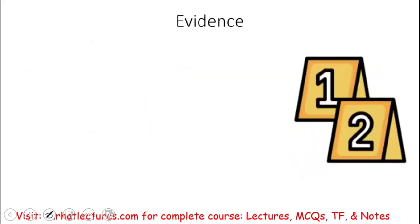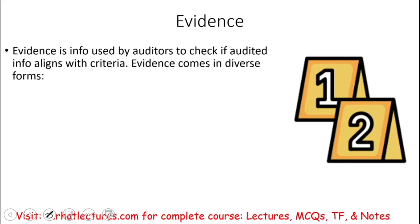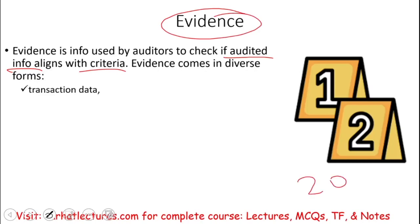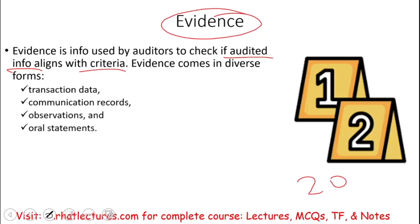As an auditor, you need to collect evidence. Evidence is used to check if the audited information aligns with the criteria — I need to collect some sort of proof. Evidence could come in diverse forms: transaction data, communication records, observation, oral statements, and many other types of data. In my course we already have about 20 lectures covering evidence — what type, how to collect it, and evidence procedures.